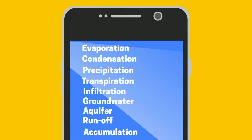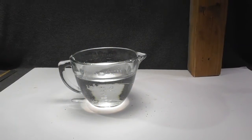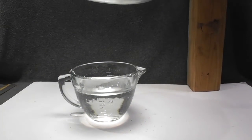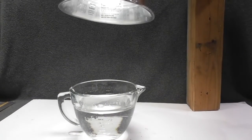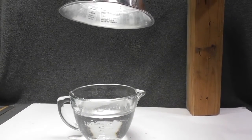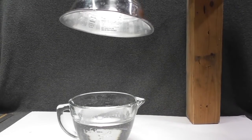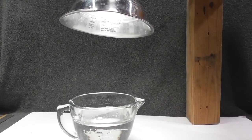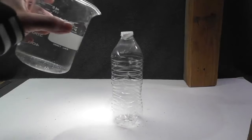Let's start with evaporation. Evaporation occurs when a liquid turns to gas. With this glass of water and the heat from the lamp, evaporation is occurring — though the problem is you can't see the evaporation.